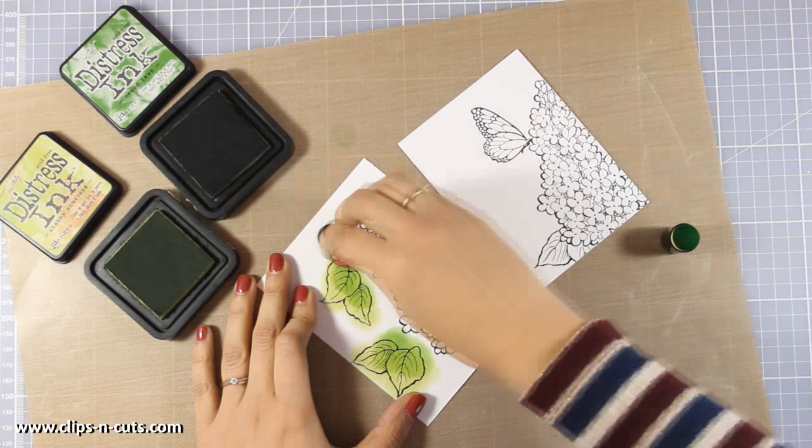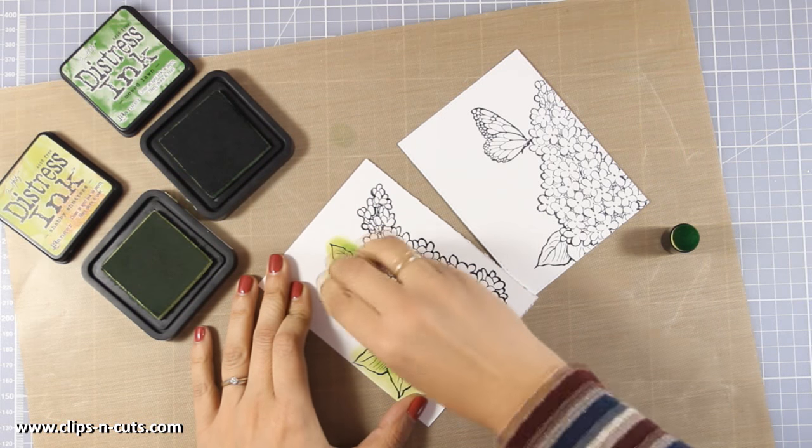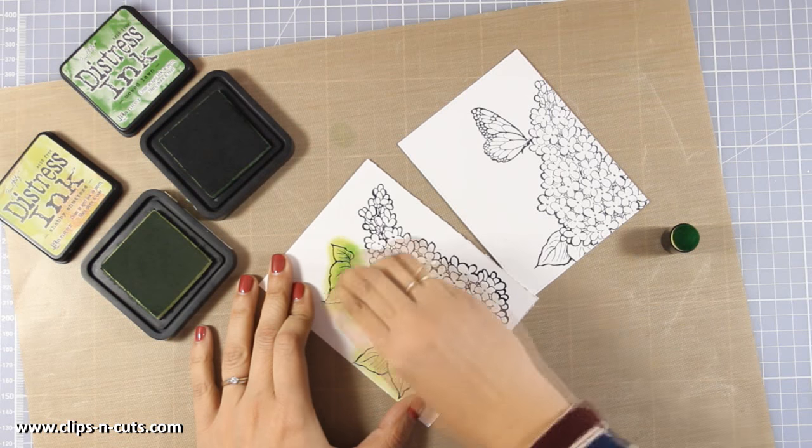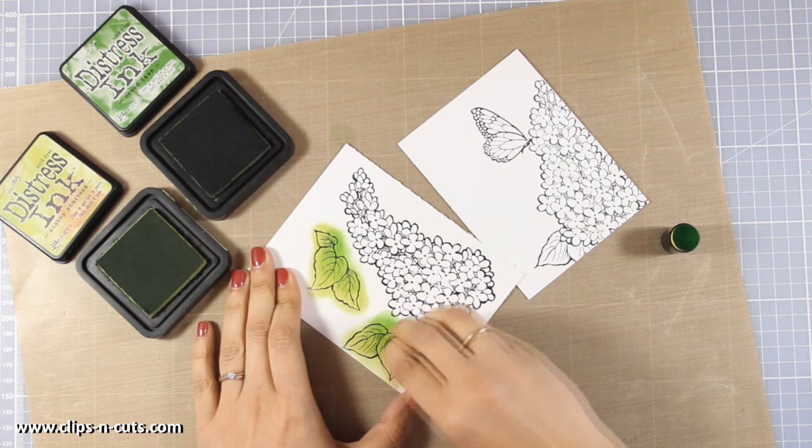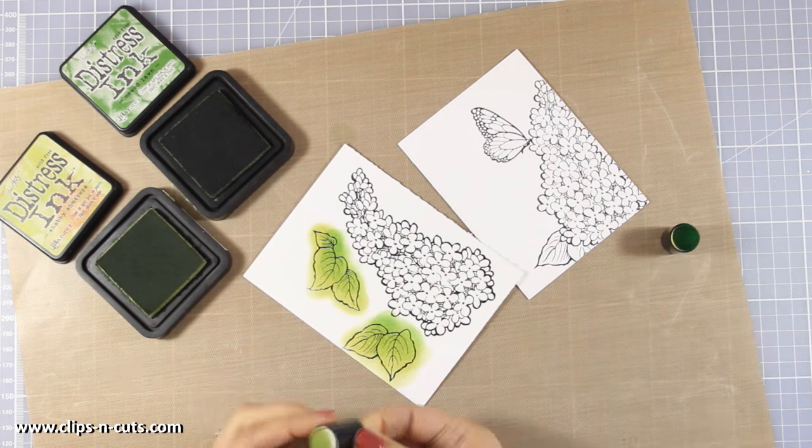The cardstock that I am using is white cardstock by Simon Says Stamp and it's the heavyweight cardstock. It's very smooth and it takes this distressing beautifully. I am going to add a link down below so that you can see which cardstock I use.